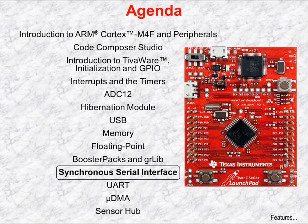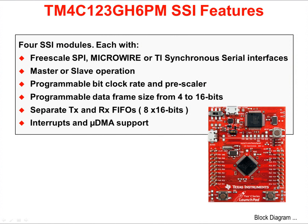In this chapter, we'll take a look at the Synchronous Serial Interface. It supplies access to SPI, Microwire, and TI Synchronous Serial Interfaces. The TM4C123G H6PM has four independent SSI modules. Each module supports SPI, Microwire, and TI Synchronous Serial Interfaces. In each mode,